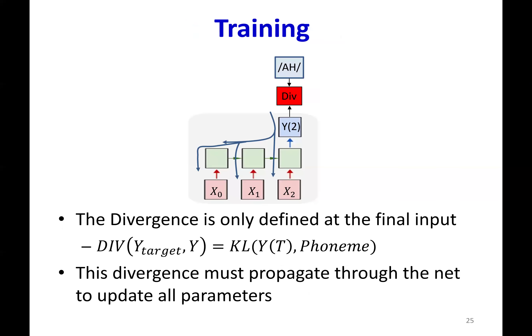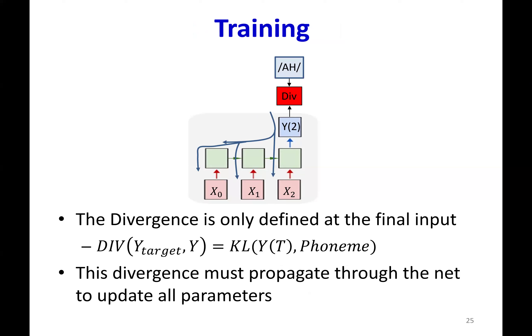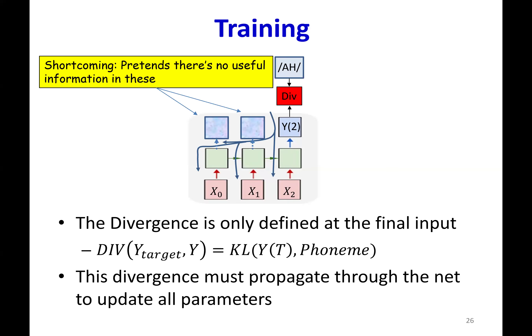When I perform backpropagation, here's what we'd have. We'd have the output at the final input and the desired output at the final input. You can compute the divergence between these two at the final input, and the derivatives of this divergence can be backpropagated. But when you do this, you are ignoring something useful. The network is actually producing outputs at these other times too — we're just pretending that there has been no output, so you're ignoring these outputs.